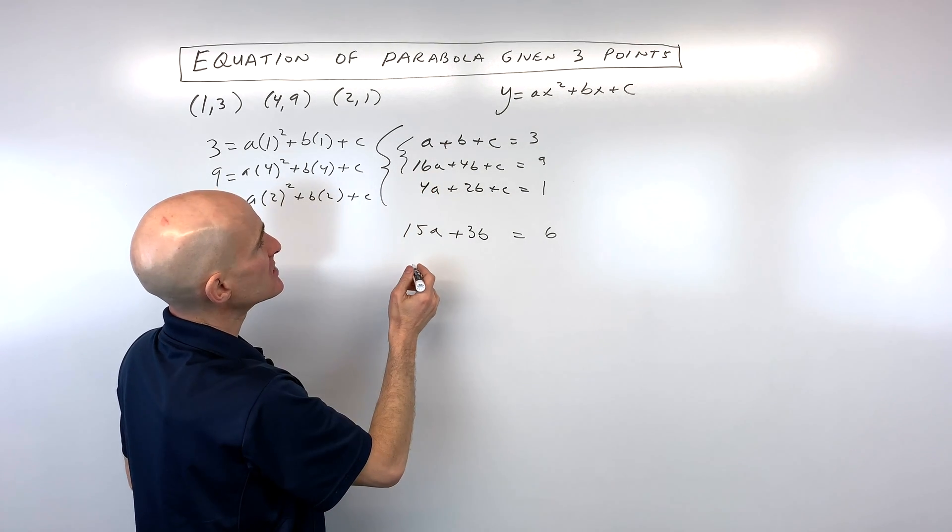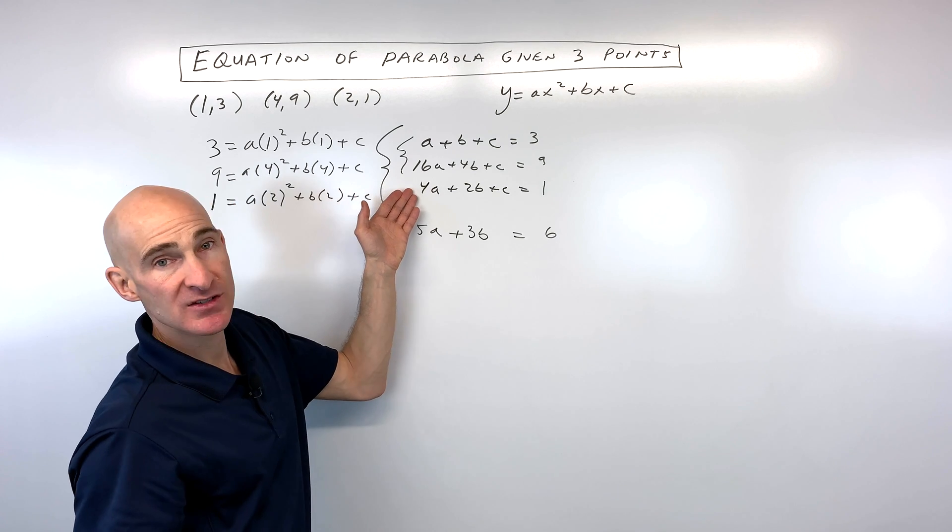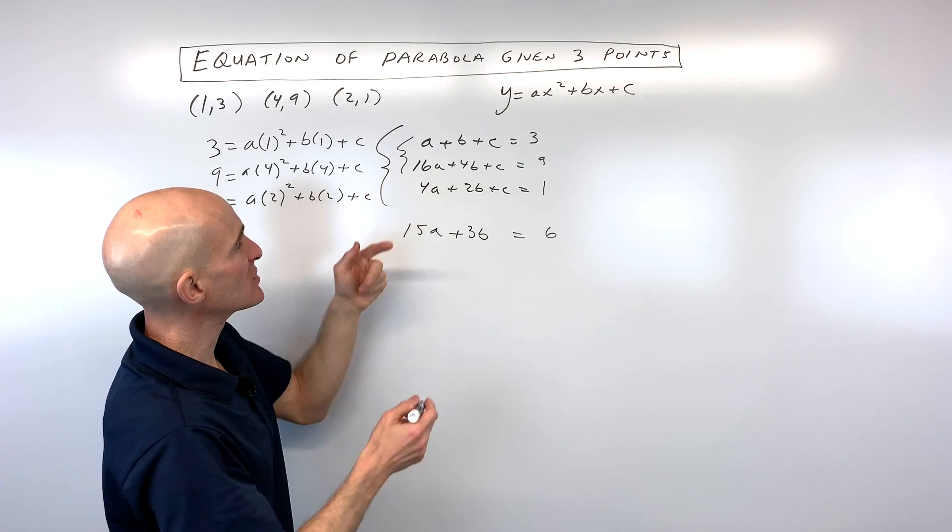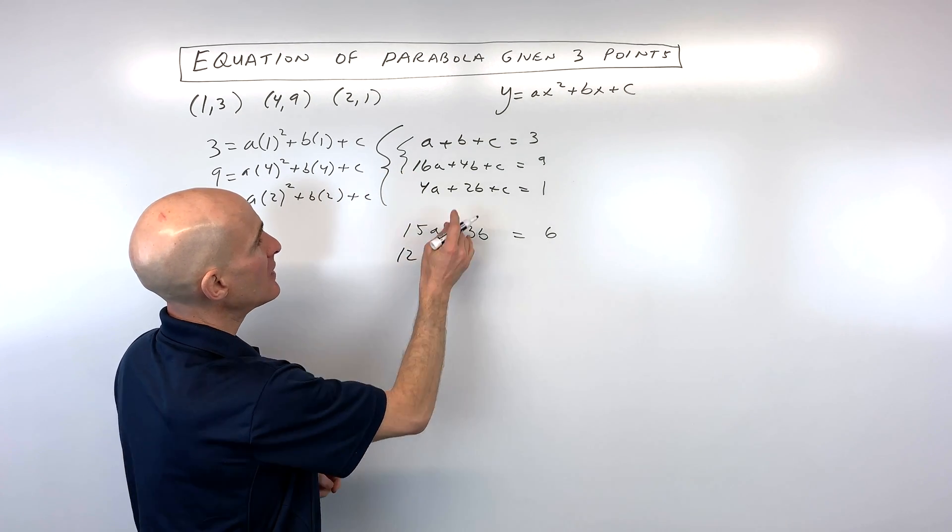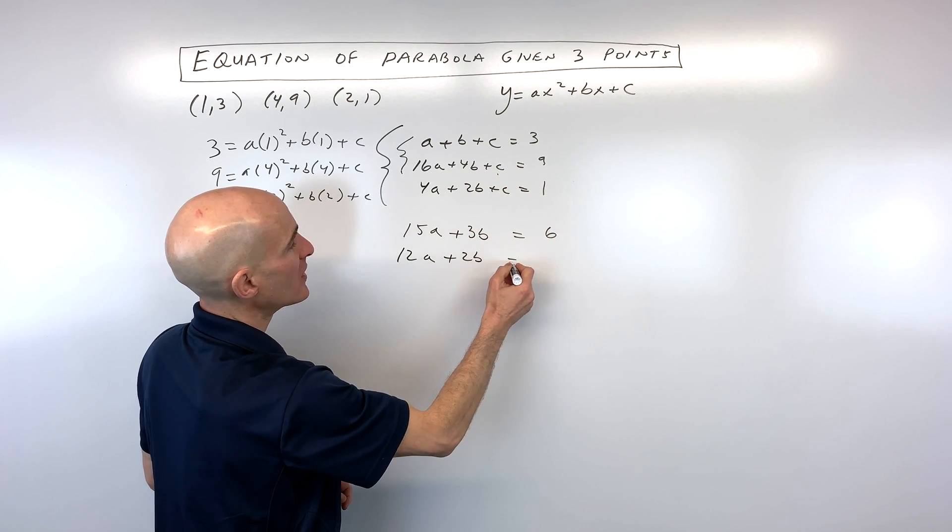So I'm going to do 4a minus, actually, you know what? I'm going to do it the other way. Let me take the second equation minus the third equation. So 16a minus 4a is 12a. 4b minus 2b is 2b. c minus c is 0. And 9 minus 1 is 8.